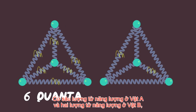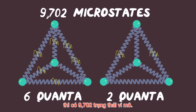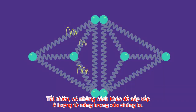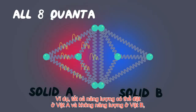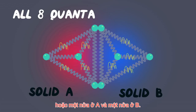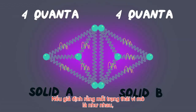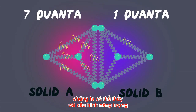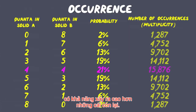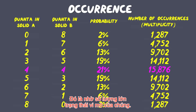For six quanta of energy in solid A and two in solid B, there are 9,702 microstates. Of course, there are other ways our eight quanta of energy can be arranged — for example, all of the energy could be in solid A and none in B, or half in A and half in B. If we assume that each microstate is equally likely, we can see that some energy configurations have a higher probability of occurring than others, due to their greater number of microstates.